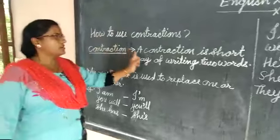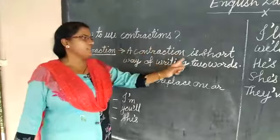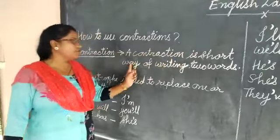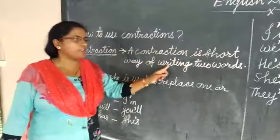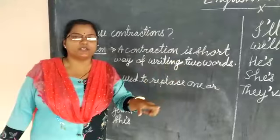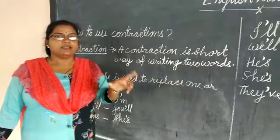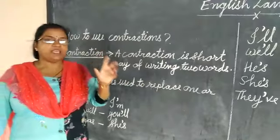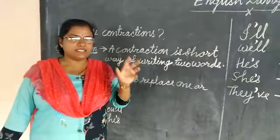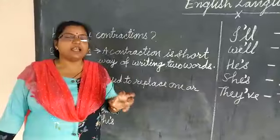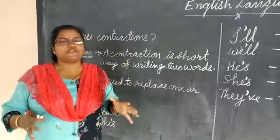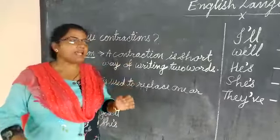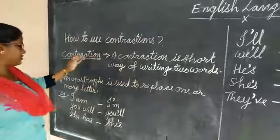A contraction is a short way of writing two words. There are two words, and we make it one single word. That short form is known as a contraction.